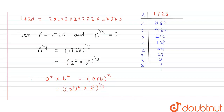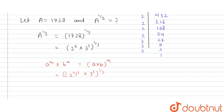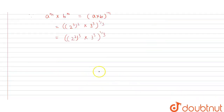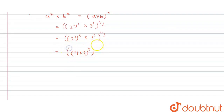So we separate this 1/3 on both sides. This value comes out to be 2 raised to power 2 raised to power 3, multiplied by 3 raised to the power 3, whole raised to power 1/3. After putting this value, this is 4 raised to power 3. So (4 × 3) whole raised to power 3, then raised to the power 1/3.